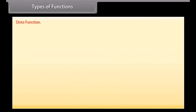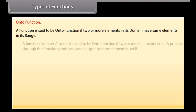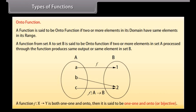Onto function: A function is said to be an onto function if two or more elements in its domain have the same elements in its range. Or, a function from set A to set B is said to be onto if two or more elements in set A processed through the function produce the same output in set B. A function f from X to Y that is both one-to-one and onto is said to be bijective.